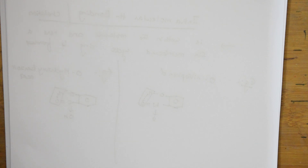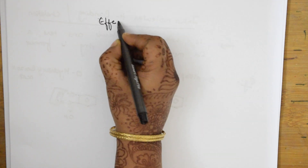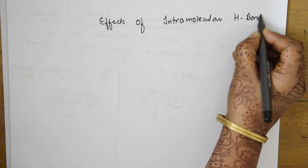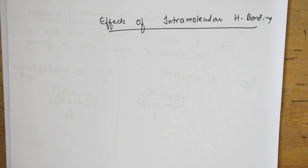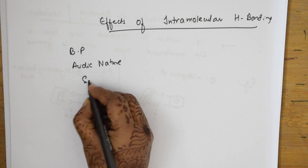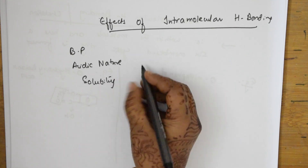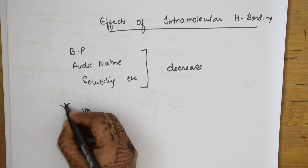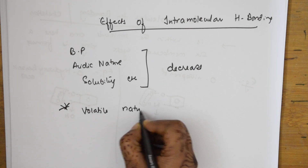Due to intramolecular H bonding, the effects are opposite to intermolecular. Boiling point, acidic nature, and solubility all decrease because the molecules get associated within themselves. But volatile nature increases. Remember that: due to intramolecular hydrogen bonding, boiling point, acidic nature, and solubility decrease, but volatile nature increases.